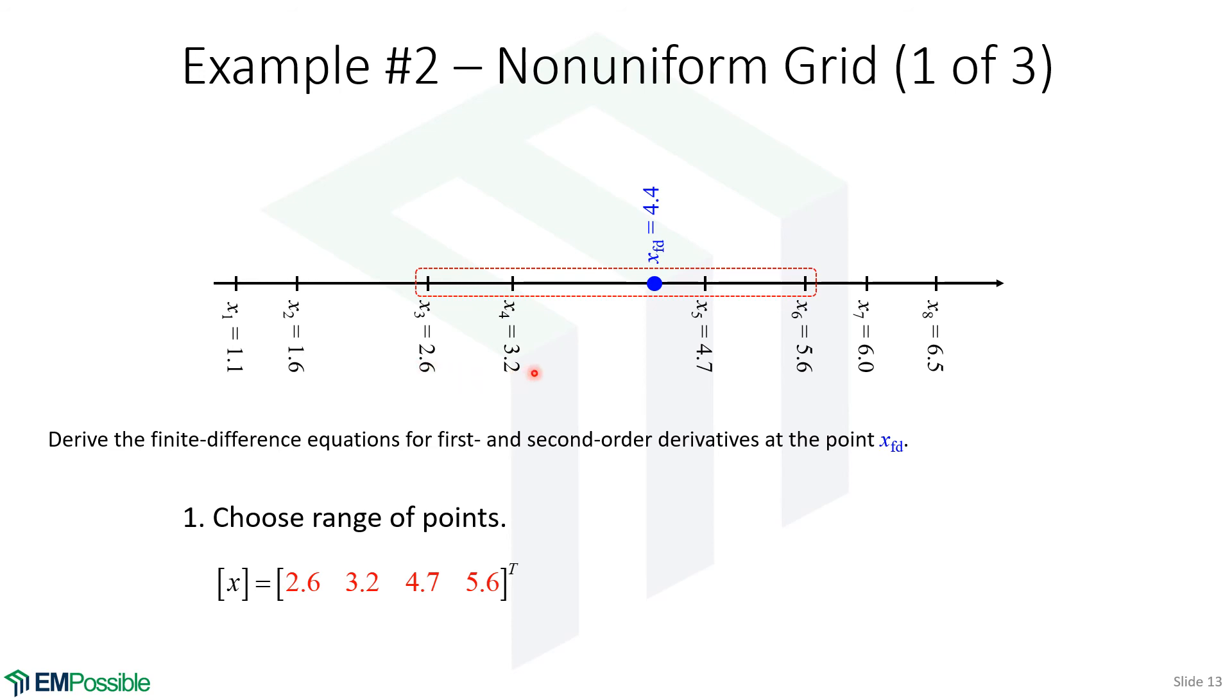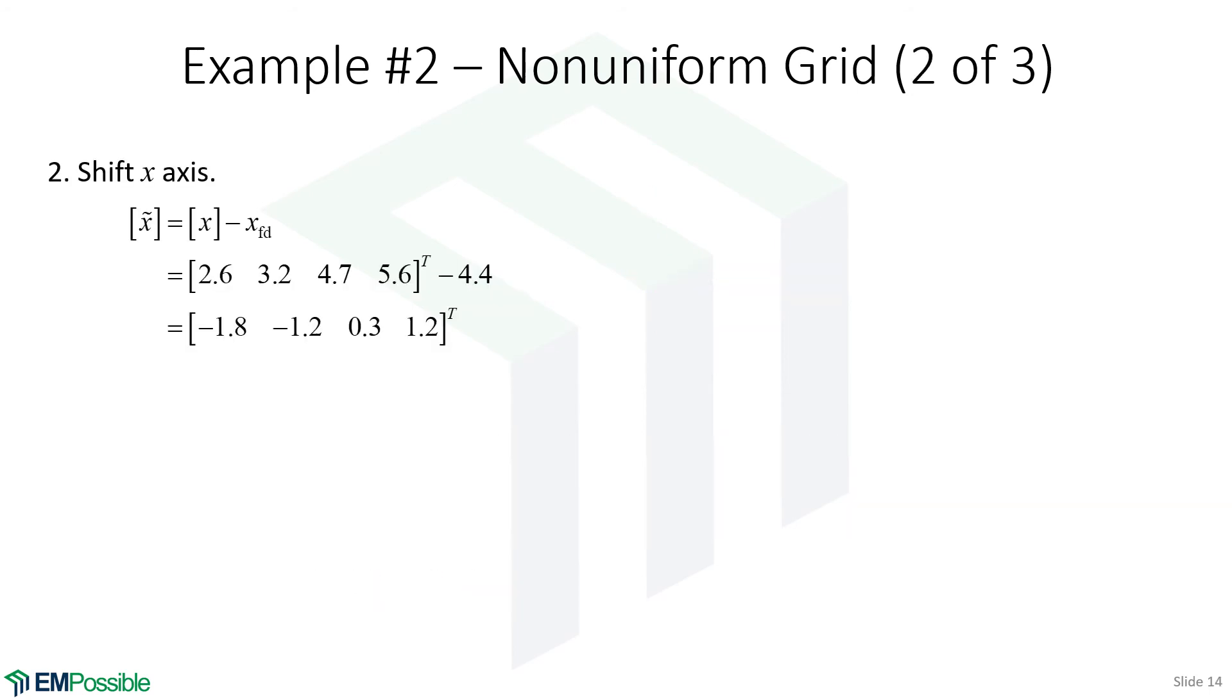I'm going to choose an array of points: 2.6, 3.2, 4.7, and 5.6. I could grab more if I wanted to, but I decided to only grab these four and calculate my finite difference right here. Then I translate these coordinates to place zero where we want to calculate our finite difference. We take the original point values, subtract 4.4, and now we have our offset values. Notice there's no zero in here, because where we're calculating our finite difference doesn't fall exactly on where any of our points are. No need to be alarmed not seeing a zero. Those are our offset coordinates.